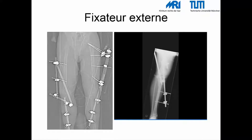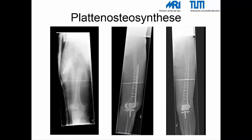Diese Röntgenbilder zeigen beispielhaft die Versorgung von Femurfrakturen mittels Fixateur extern. Deutlich zu erkennen ist die passagere Stabilisierung, die gelenkübergreifend erzielt wurde. Für periprothetische Frakturen oder distale Femurfrakturen hat sich die Applikation von polyaxial-winkelstabilen Plattensystemen als optimal herausgestellt.